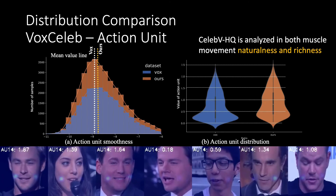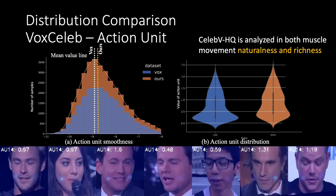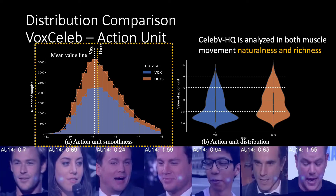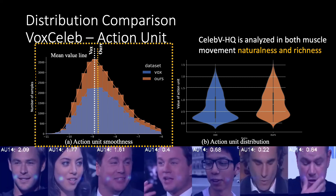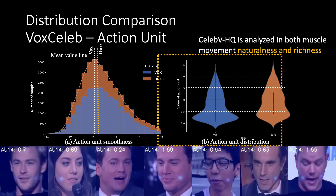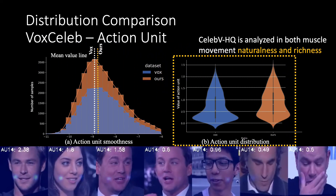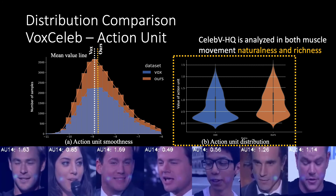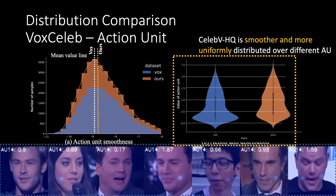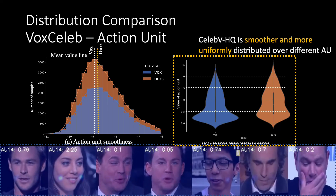The dataset is analyzed in both muscle movement naturalness and richness. Smoothness is measured by log dimensionless jerk, and richness is measured by action unit values. CelebVHQ outperforms VoxCeleb on both metrics. We also provide an example of action unit 14.